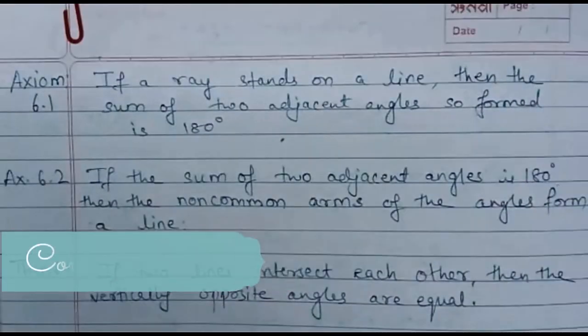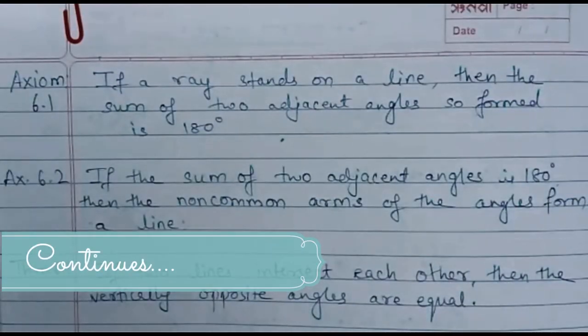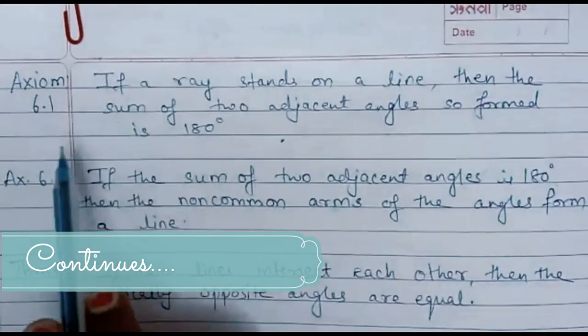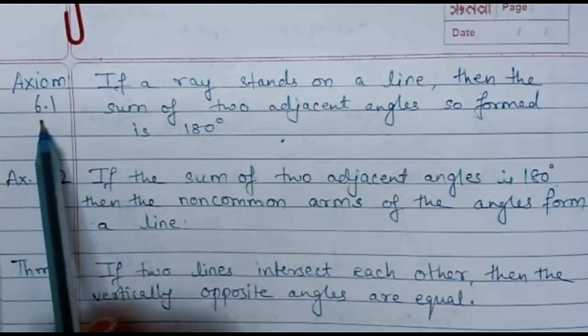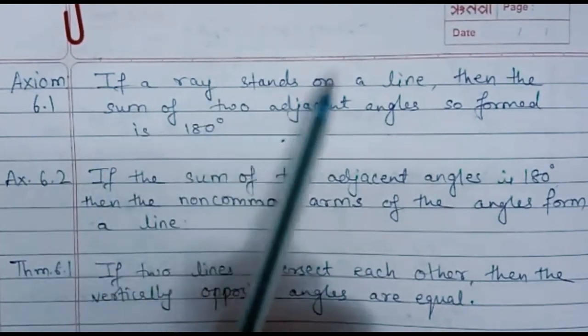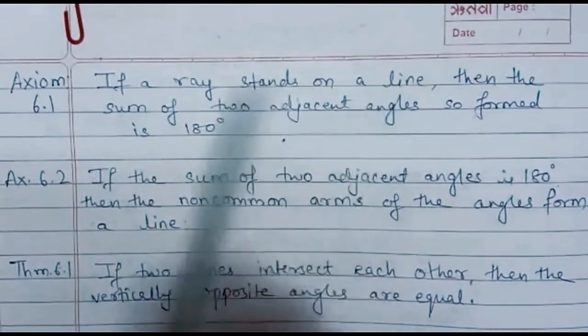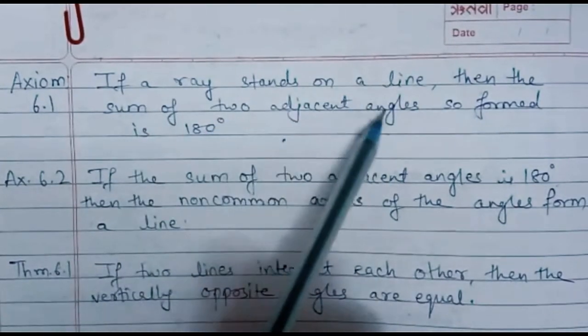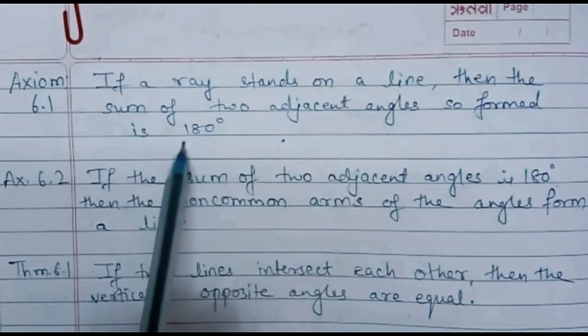Hello everyone, so we are back today with some important results. First we will be learning axiom 6.1. The first important result is if a ray stands on a line then the sum of two adjacent angles so formed is 180 degrees.